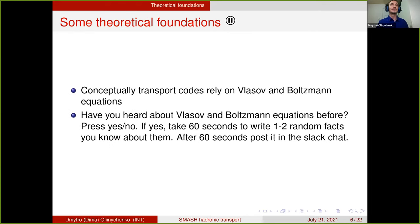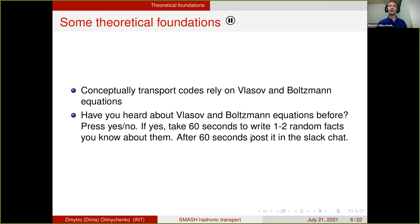Let's go to the transport theory itself. I'm often asked: transport codes — what equations are they actually solving, what physics is underlying? You cannot just randomly propagate particles; you have to put some equation in there. The equations being solved are the Vlasov and Boltzmann equations. Have you heard of these before? Take two minutes to write one or two random facts about Vlasov and Boltzmann equations.